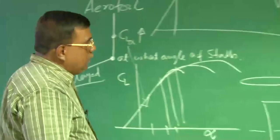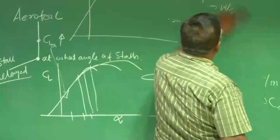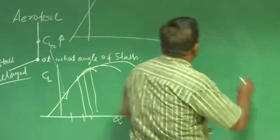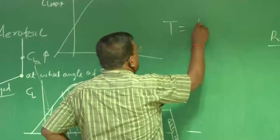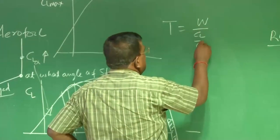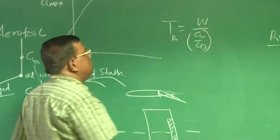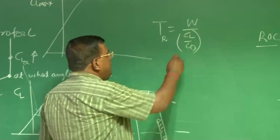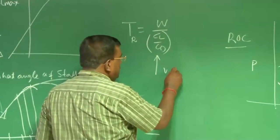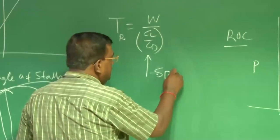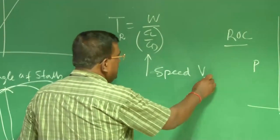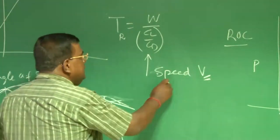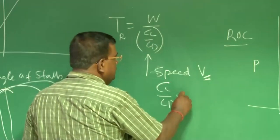And for cruise, anyway, you know that for cruise, I can write thrust equal to W by CL by CD. If I want for cruise thrust to be minimum for a given weight, what I should do is, I should fly at a speed, at a speed V, such that CL by CD is maximum.